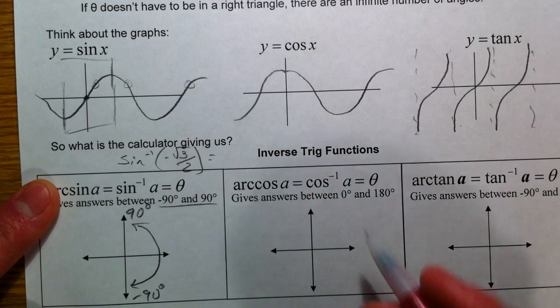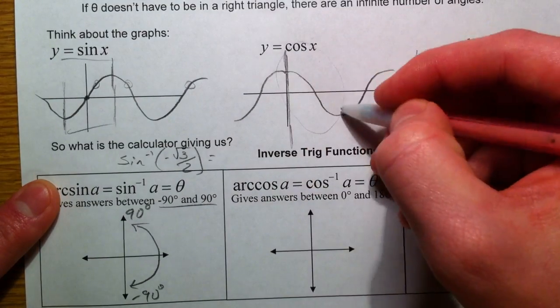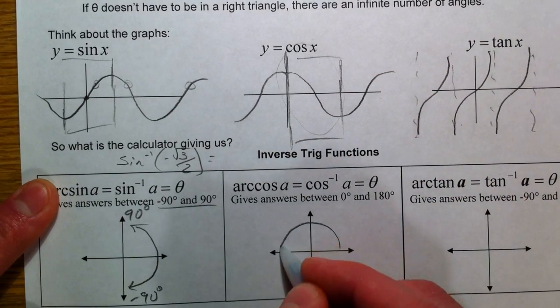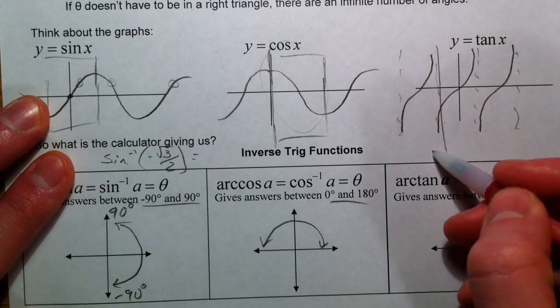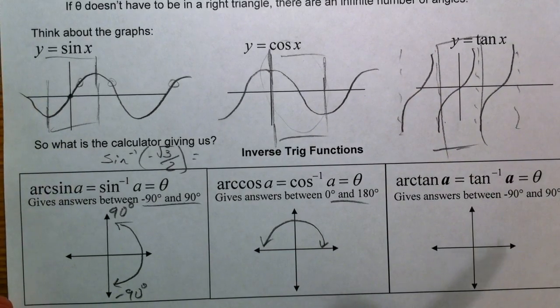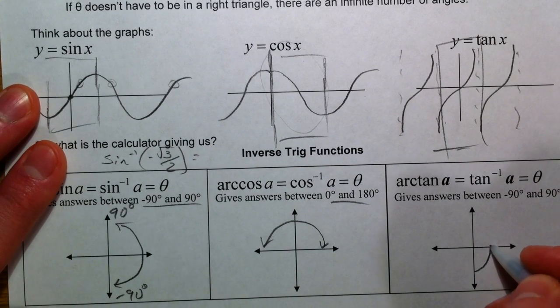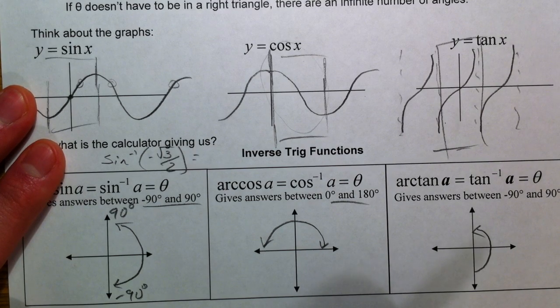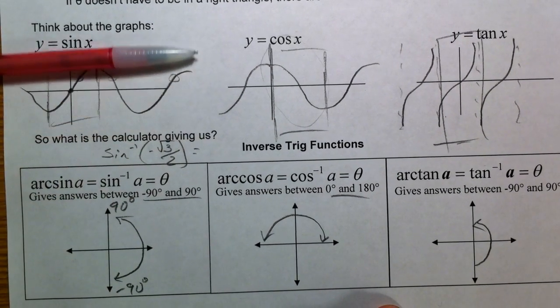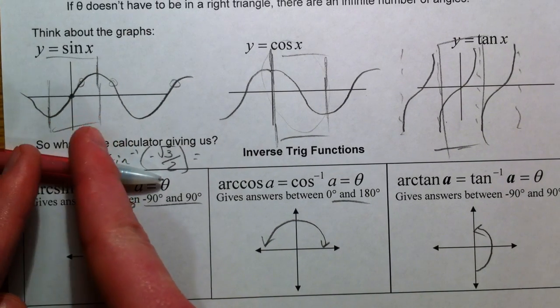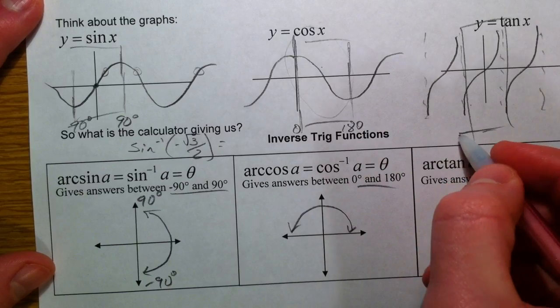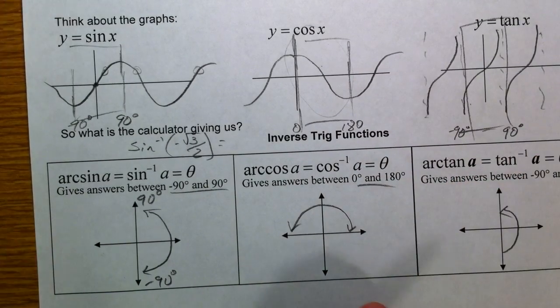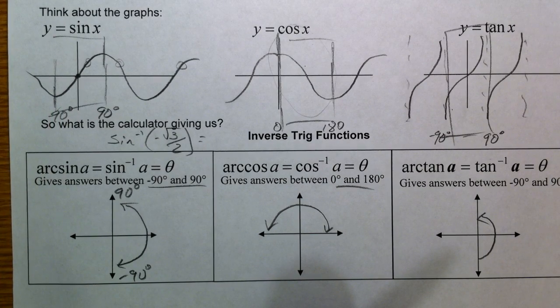In the same way for cosine, we have all of our answers right here, and so we're going to restrict it between zero and 180. And in the same way with tangent, we're going to restrict inverse tangent right here. The reason being is when we first talked about inverse functions, our function had to pass the horizontal line test in order for the inverse to pass the vertical line test. This function is only going to pass the horizontal line test if we restrict it: negative 90 to 90, negative 90 to 90, and zero to 180, and negative 90 to 90.